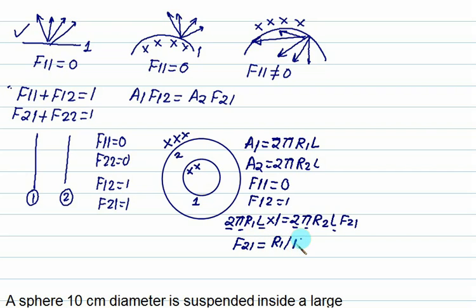Now we use this rule and from this we can calculate F22 equals to 1 minus F21 is R1 by R2.